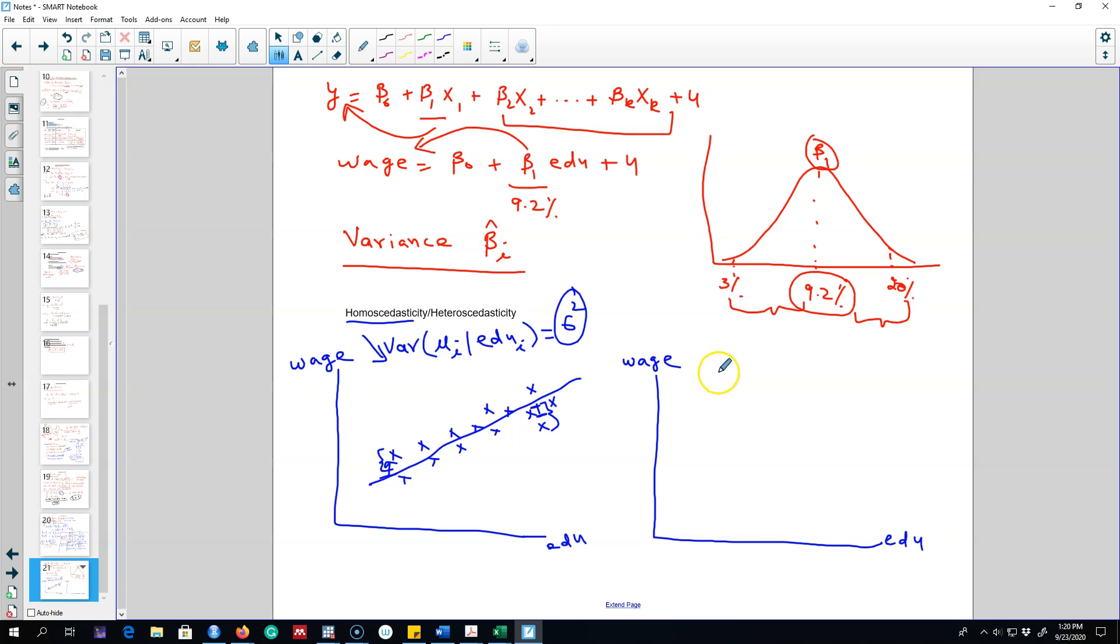In contrast, heteroscedasticity means that the variance of these UIs, that is the error term or the residual from our fitted model, given the education level of individual i, is not a constant number. Rather, it depends on the educational level.